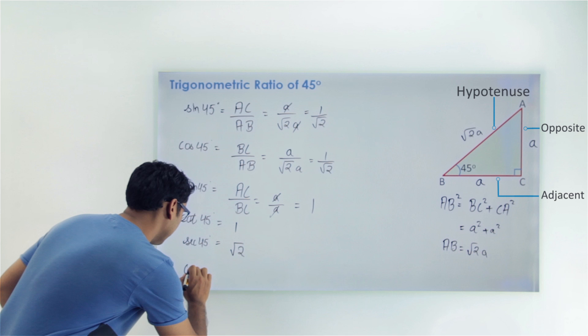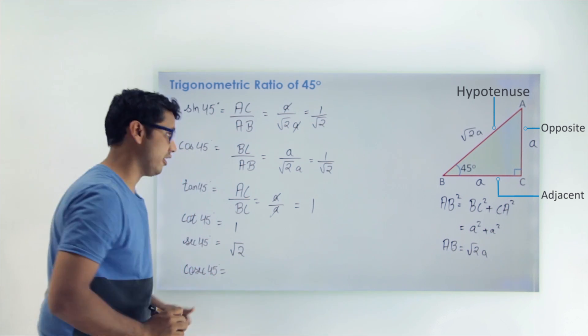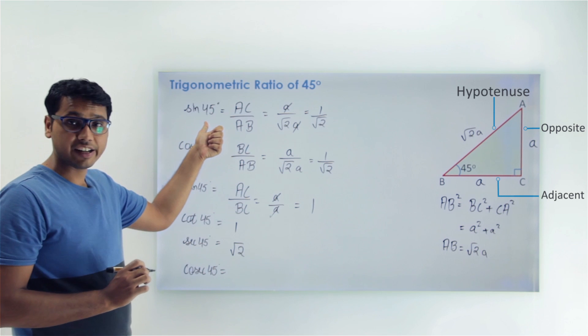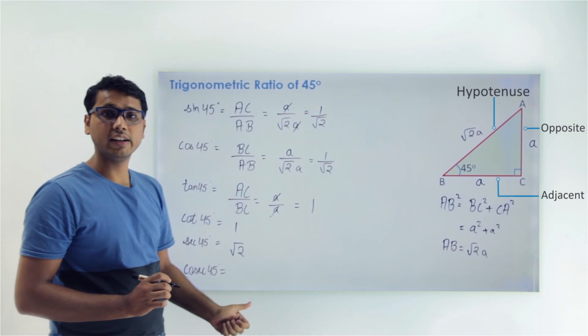And similarly, we can find the value of cosec 45 as well. The value of cosec 45 will be the reciprocal of sin 45. The value of sin 45 is 1 by √2, so we will get √2 again.